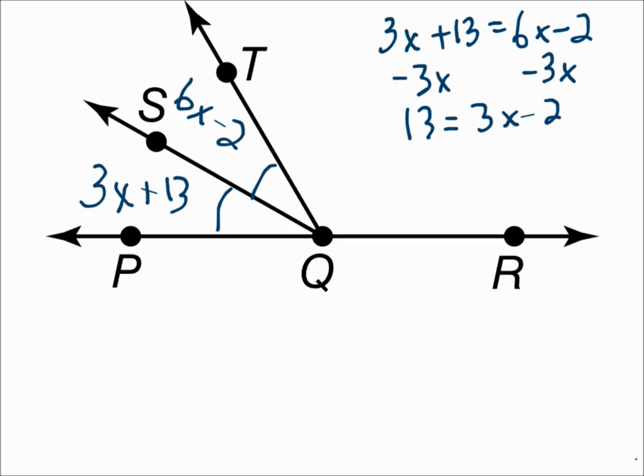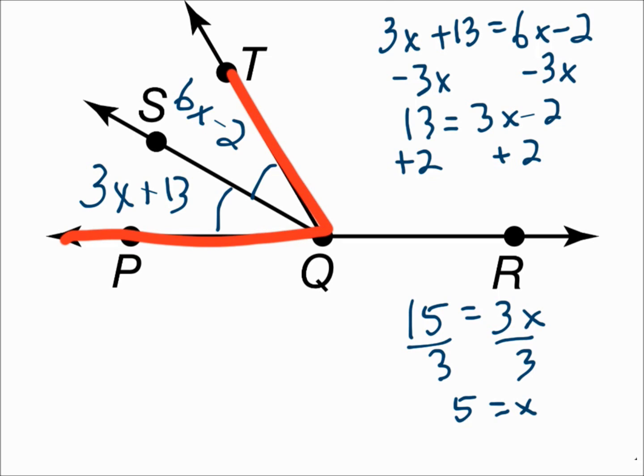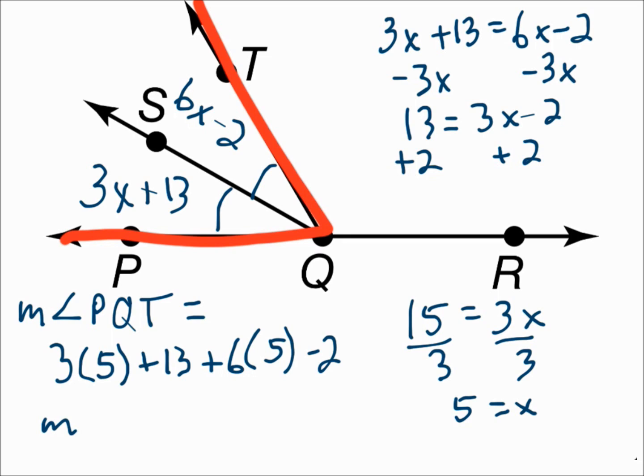Subtract 3X, and 13 equals 3X minus 2. Add 2, and 15 equals 3X. Divide by 3, and X is 5. But that's not the answer we wanted. We want the measure of angle PQT, which is these two angles put together. So we'll substitute a 5 in for X and add those angles up. The measure of angle PQT equals 3 times 5 plus 13 plus 6 times 5 minus 2. That gives you 56. So the measure of angle PQT is 56. Always answer the question they ask you. We didn't just want X, we needed the measure of angle PQT, so take it one step further.